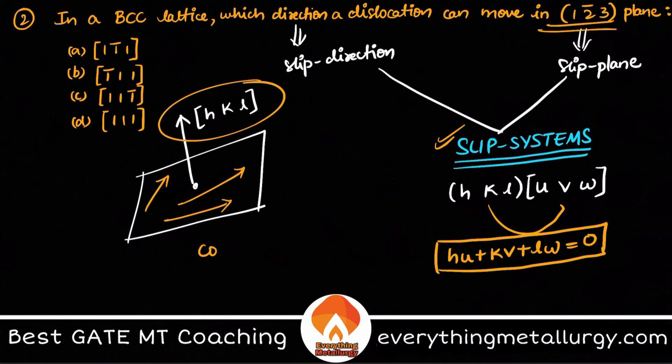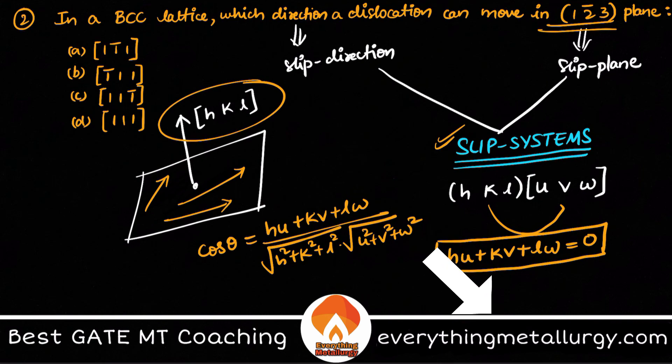Again, this can be obtained from cos theta formula. I hope you know this: hu + kv + lw divided by root of (h² + k² + l²). This is nothing but a dot product which we use in vectors. If you take the magnitudes, this is what you get. Because theta is 90, what is cos 90? Cos 90 is zero, so that is how we got this particular condition.